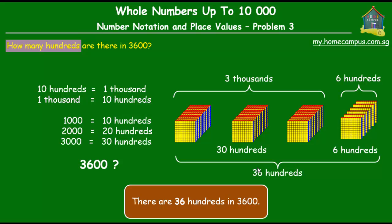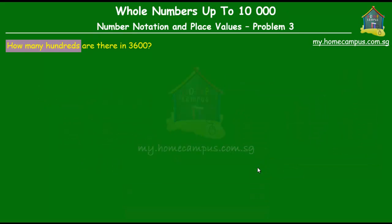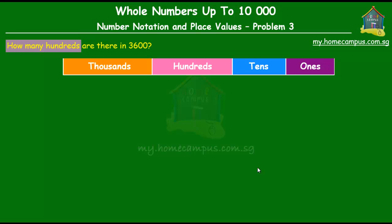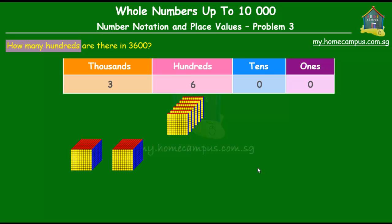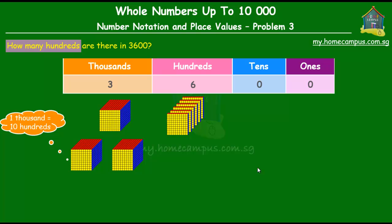Let's look at it one more time, a little differently. Using a place value chart with ones, tens, hundreds, and thousands: the number 3600 has zero ones, zero tens, six hundreds, and three thousands.